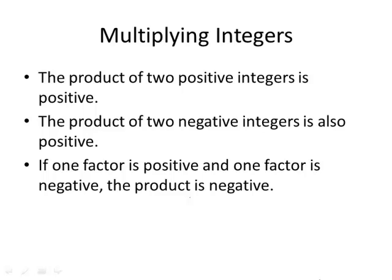When it's time to multiply integers, remember the following three statements. If you multiply two positive integers, the product is positive. If you multiply two negative integers, that product is also positive — a negative times a negative is a positive. Finally, if you multiply one positive number by one negative number, that product is going to be negative. Let's talk about why a positive times a negative is negative.